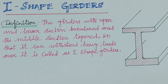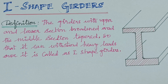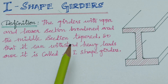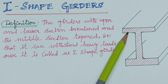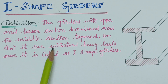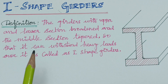What is an I-Shape Girder? A girder is a beam used in construction, generally supported at its two ends on opposite walls of a room. An I-Shape Girder is a girder with upper and lower sections broadened and the middle section tapered, so that it can withstand heavy loads.